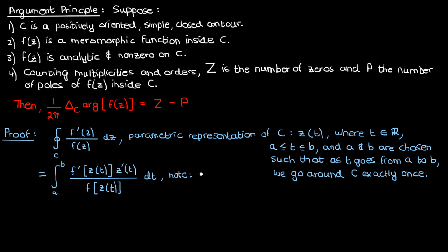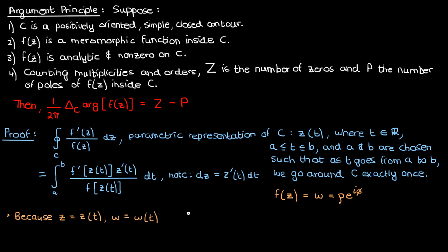Note that z prime of t is there because in order to convert dz to dt, we have to use the chain rule where dz is dz over dt, or z prime of t times dt. When we take the complex number z parametrized by t and run it through a function f, we get another complex number w, which is also dependent on t. Just as z has a polar representation, so too does w. I'll write the polar representation of w as rho times the exponential of i times phi, where both rho and phi depend on t, so f of z equals rho of t times the exponential of i times phi of t. I'll call this equation A.